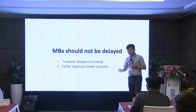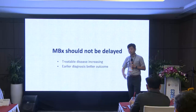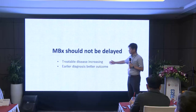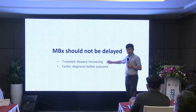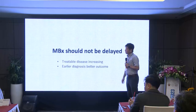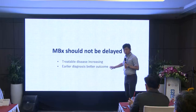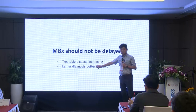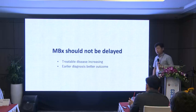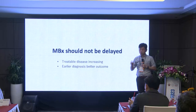So muscle biopsy should not be delayed. If you think you need muscle biopsy, you should do it as soon as possible. Of course it doesn't have to be today, but at least within one or two weeks. Because treatable conditions are increasing — including myositis and Pompe disease — and they can look like muscular dystrophy. For all those treatable conditions, earlier diagnosis gives better results. You will gain nothing by postponing the muscle biopsy.